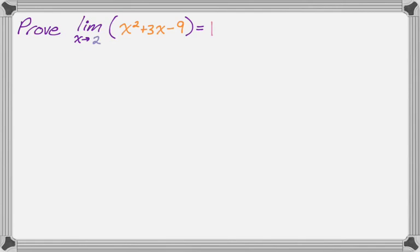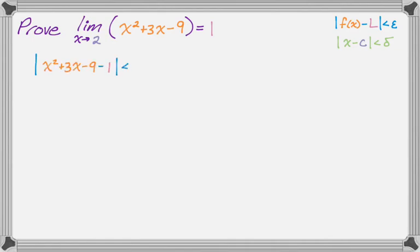We're going to try to prove that the limit as x approaches 2 of the quantity x squared plus 3x minus 9 is equal to 1. We write down our two absolute value inequalities: the absolute value of f(x) minus L is less than epsilon — that's the one we'll manipulate — and we try to manipulate it so it looks like the absolute value of x minus c is less than delta. In context: f(x) is x² + 3x − 9, L is 1, so we want |x² + 3x − 9 − 1| < ε. And our target is |x − 2| < δ; we choose that thing as delta.